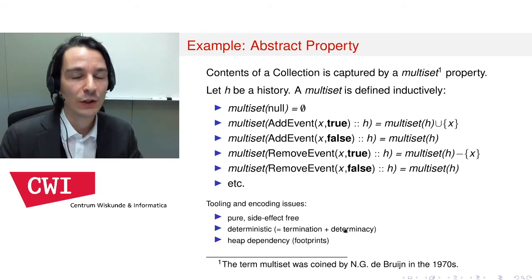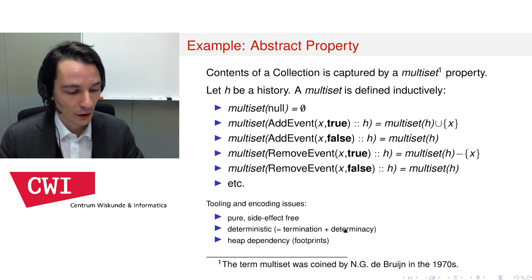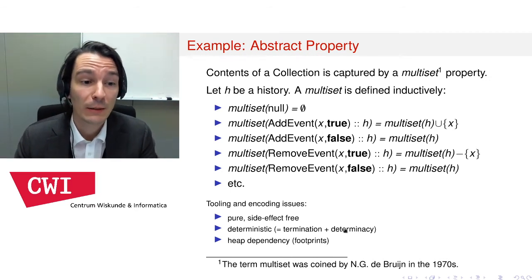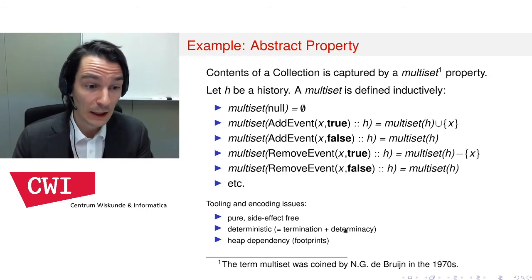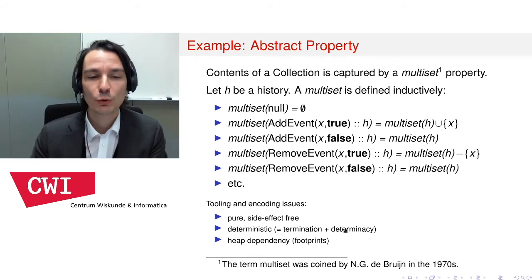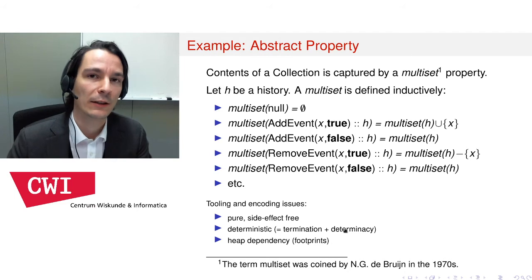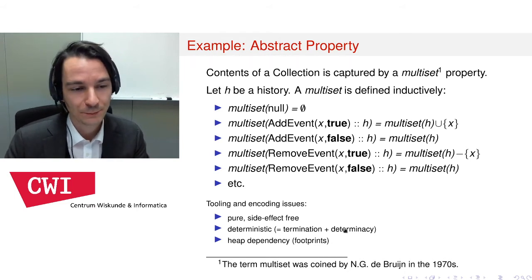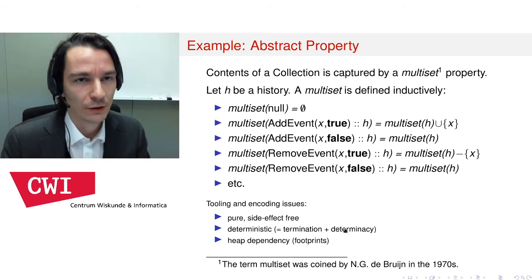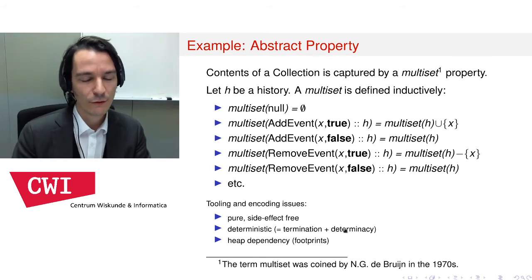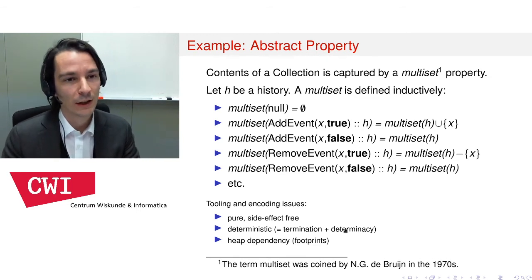We had to deal with a number of tooling and encoding issues in KeY. For example, to work with these attributes we have to define them as pure, side-effect-free methods that cannot affect the heap. We also have to prove that these attributes are deterministic — meaning that computing them is deterministic and that they terminate. Other technical issues arose as well; for instance, the footprint of a history is needed to reason about it.